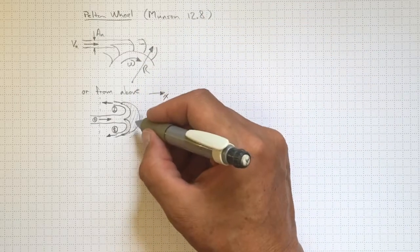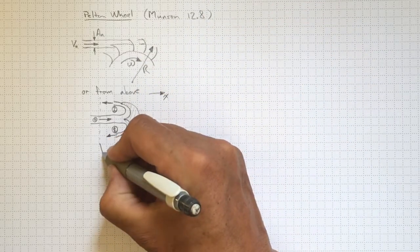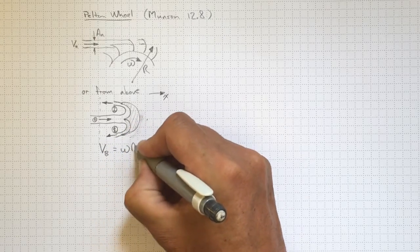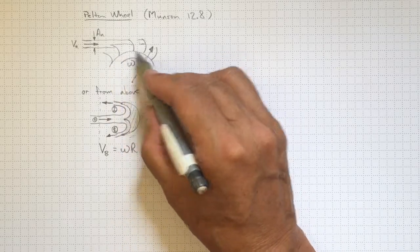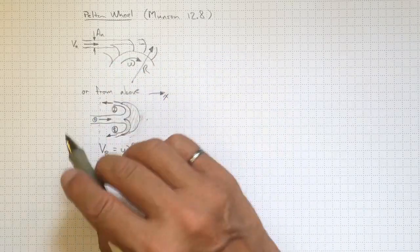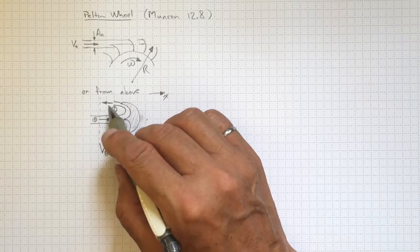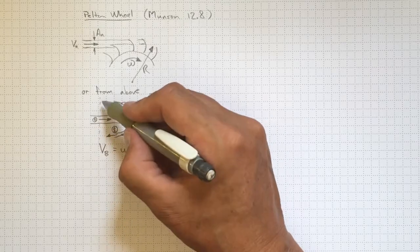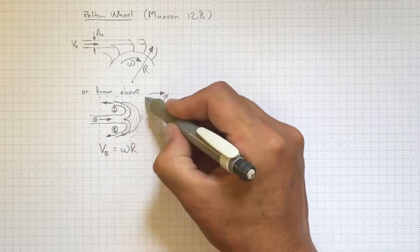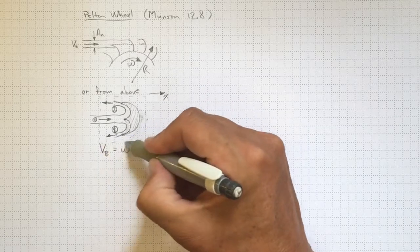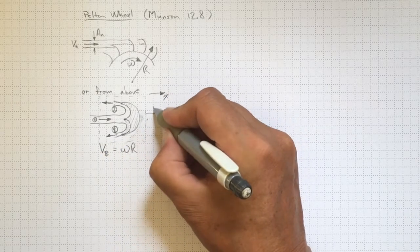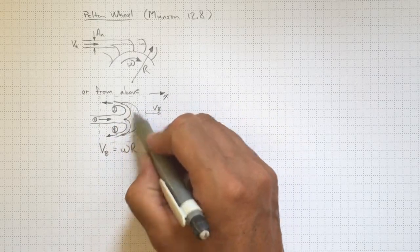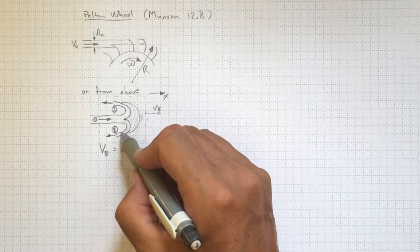The velocity of the buckets moving away in the x-direction is equal to omega times r, at least if we approximate this curvature as being more or less a straight line — and it's not a bad approximation. We have the fluid coming in at location one, going out at location two, and we've chosen a control volume around our bucket that's moving at the bucket velocity, so that this blade is stationary within our analysis volume.